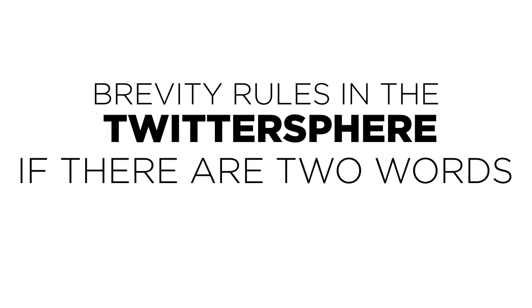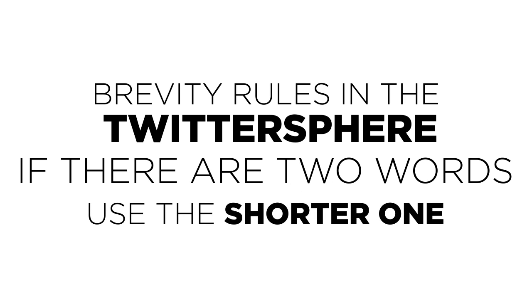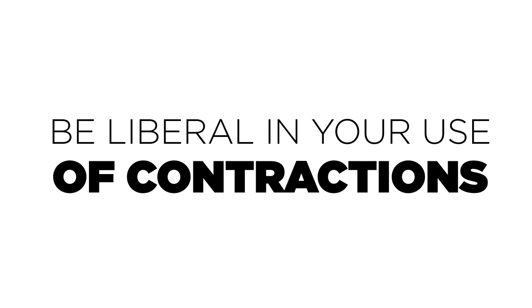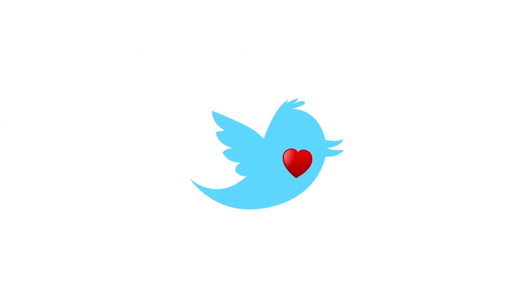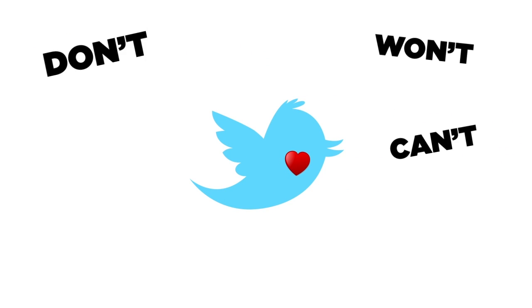If there are two words that do a good job conveying your message, use the shorter one. Be liberal in your use of contractions. Your high school English teacher might not like them, but Twitter loves them. Can't, won't, don't, we're, you're, and so forth should be near the top of your toolbox.